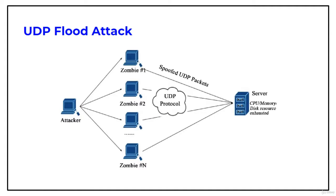The first type of attack is UDP flood attack. An attacker sends spoofed UDP packets at a very high packet rate to a remote host on random ports of a target server using a large source IP range. Flooding of UDP packets causes the server to repeatedly check for non-existent applications at those ports.